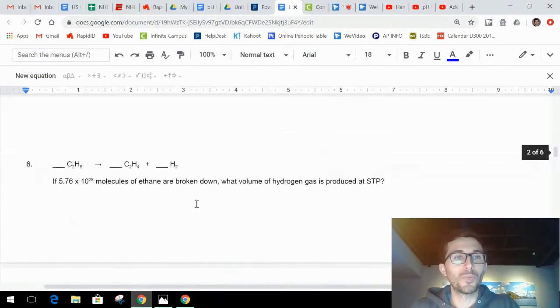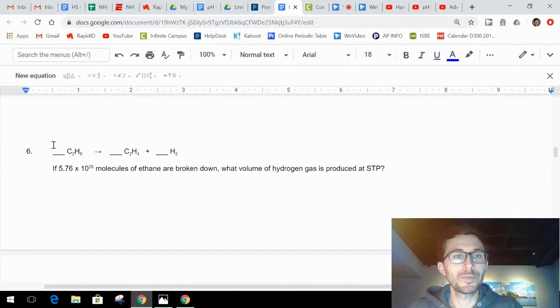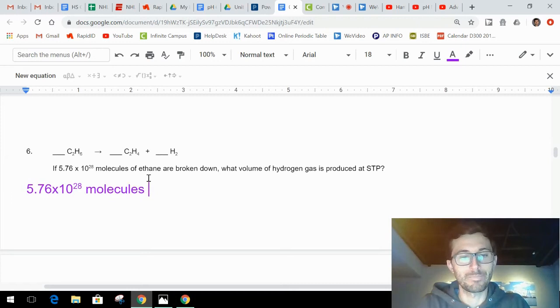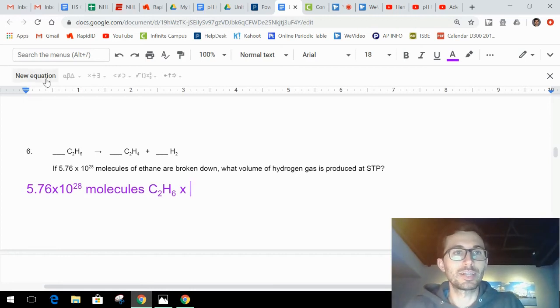I want to quickly run through one more. Number 6 up here, this one's already balanced. Two C's, two C's, six H's, six H's. Note that we start with molecules of ethane are broken down. If you don't know what ethane is, it's okay because it says are broken down, so it has to be this because it breaks down into the two products. So it has to be the C2H6. I'm going to write 5.76 times 10 to the 28th molecules of C2H6. I'm going to set up my conversion.